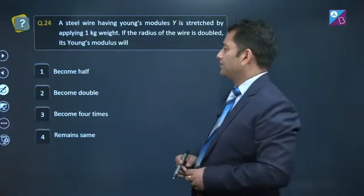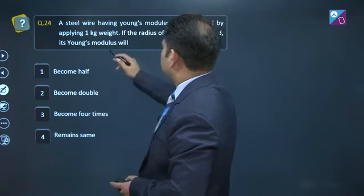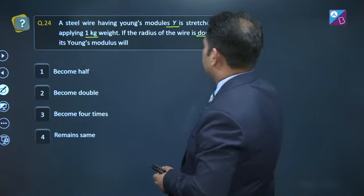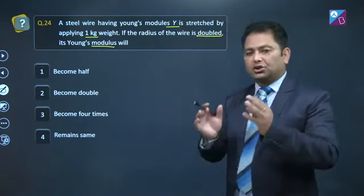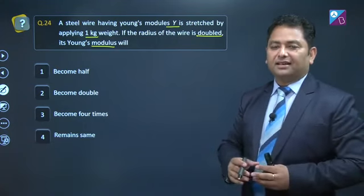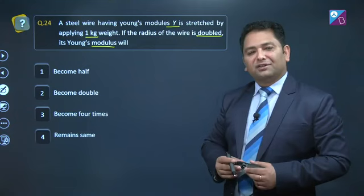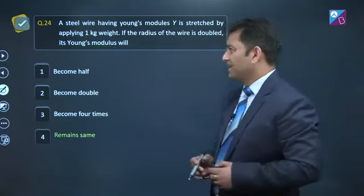Now question number 24. A steel wire having Young's modulus y is stretched by applying 1 kg weight. If the radius of the wire is doubled, Young's modulus will. By Young's modulus geometry pe depend nahi karta hai, yeh toh nature of material pe depend karta hai. The nature of material of course is not going to change. Yani ki Young's modulus will remain same.